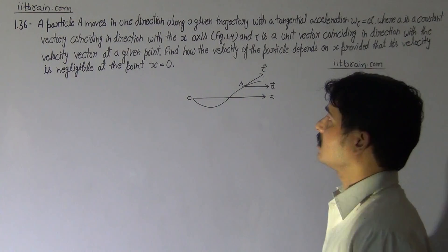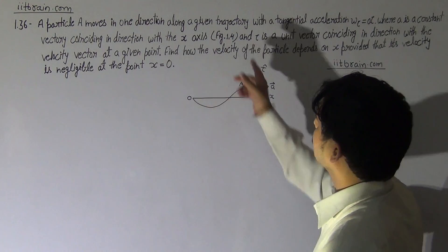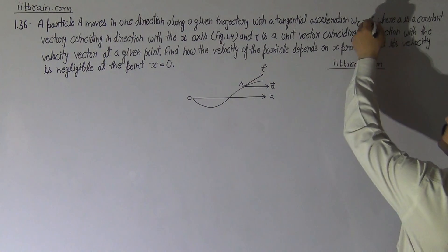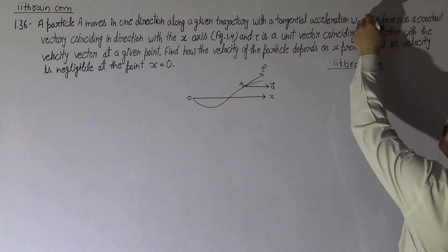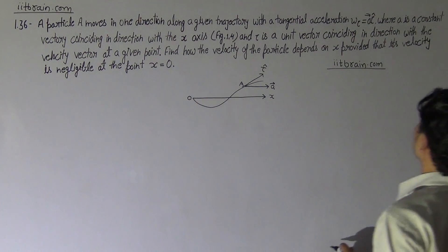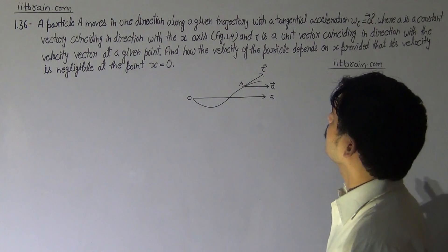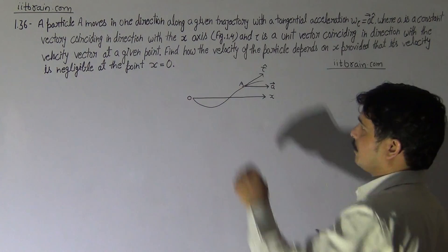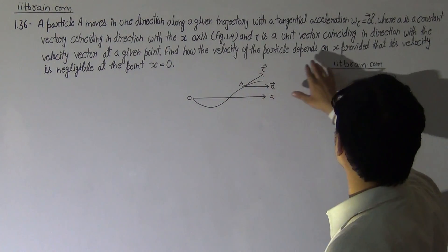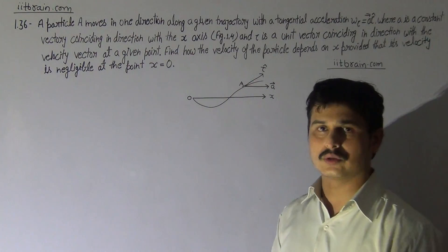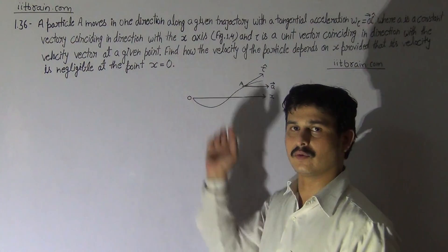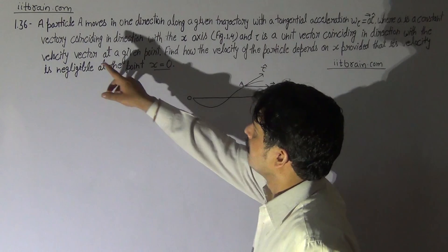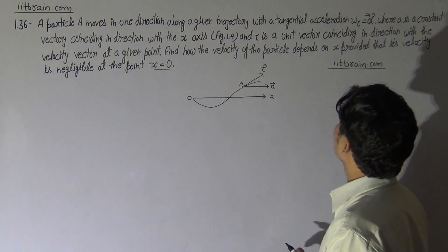Hello students, this is problem 1.36. A particle A moves in one direction along a given trajectory with a tangential acceleration a_τ = A·τ, where A is a constant vector coinciding in direction with the x-axis, and τ is the unit vector coinciding in direction with the velocity vector at a given point. Find how the velocity of the particle depends on x, provided that its velocity is negligible at x equal to 0.